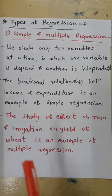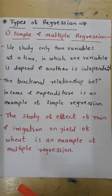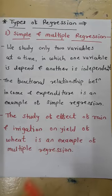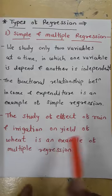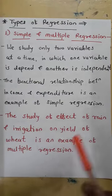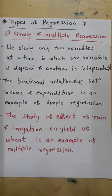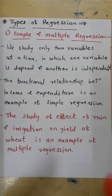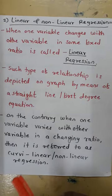For multiple regression, the example is: rain, irrigation, and wheat. Rain is independent, irrigation is dependent, and wheat production is the outcome — that is the multiple regression example. The second type is linear and non-linear regression.